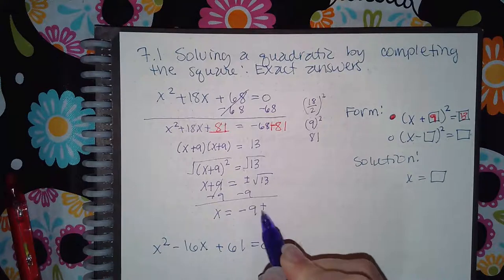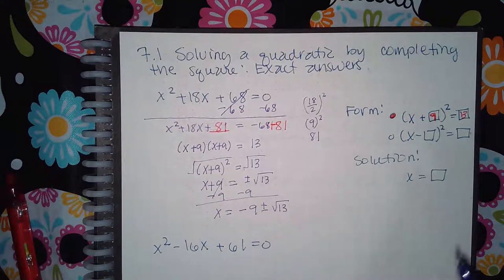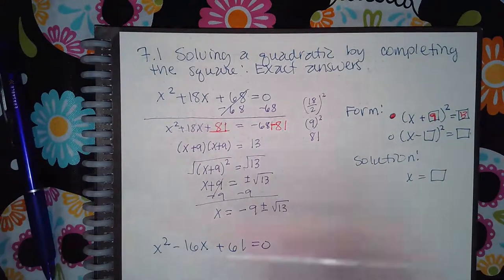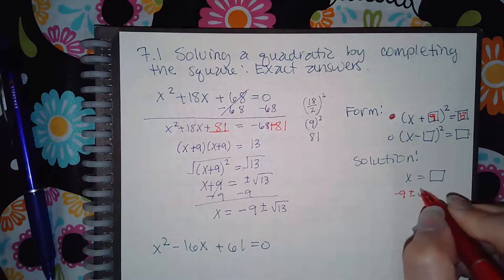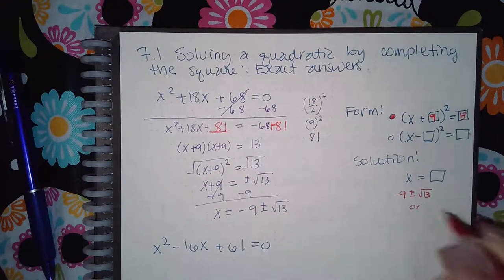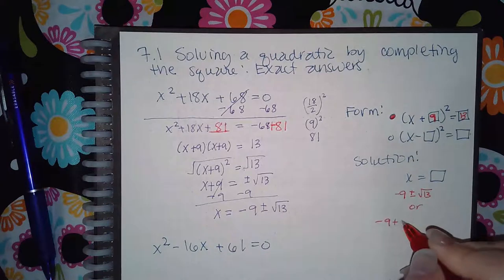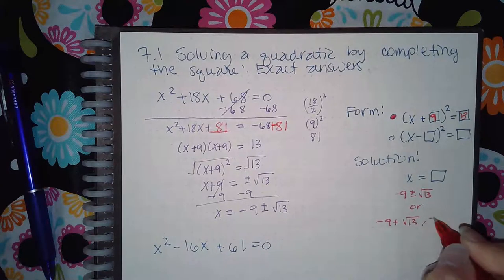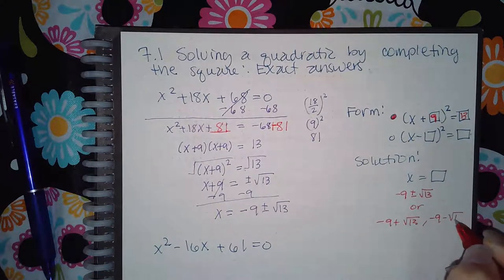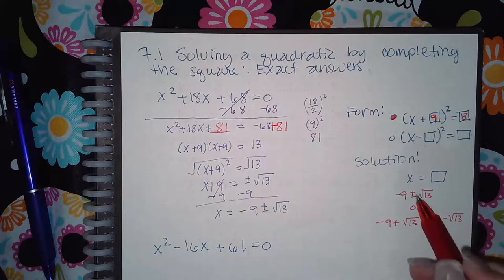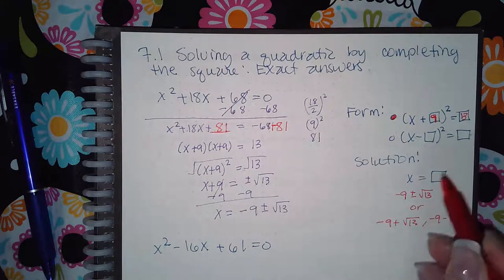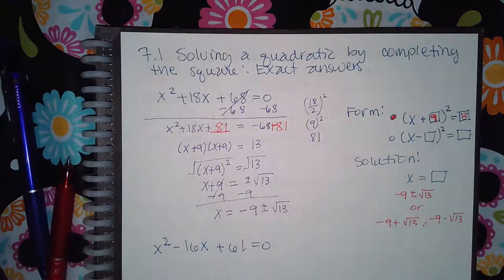So then in this box I would have to type negative 9 plus or minus the square root of 13, or I would type them in individually depending on the directions. So one of these two things will be allowed to be typed in this box. Now for the next example, it's very similar, just different numbers.